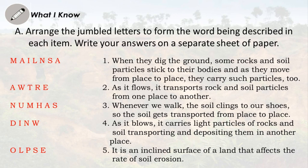As it flows, it transports rock and soil particles from one place to another. 3. Whenever we walk, the soil clings to our shoes, so the soil gets transported from place to place. 4. As it flows, it carries light particles of rocks and soil, transporting and depositing them in another place. 5. It is an inclined surface of a land that affects the rate of soil erosion.